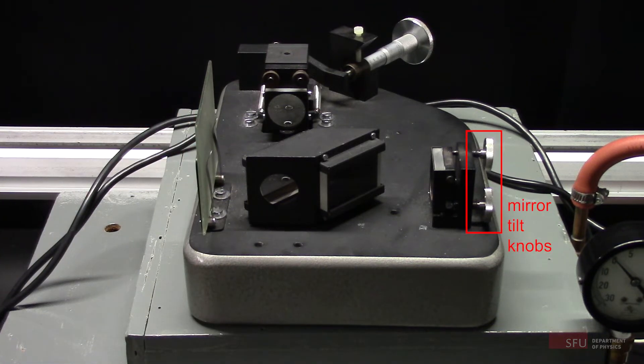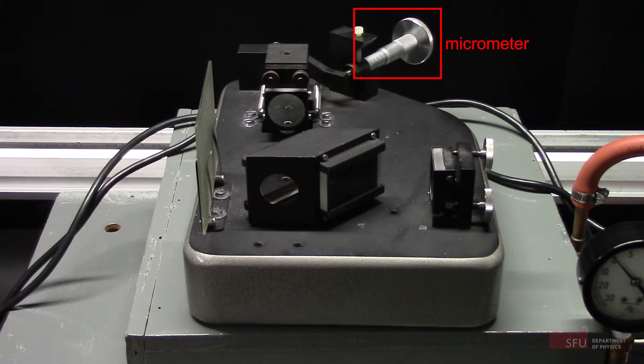These two knobs adjust the mirror tilt on this arm of the interferometer, while the micrometer controls the mirror translation on the other arm.